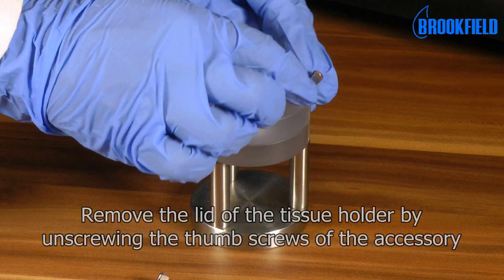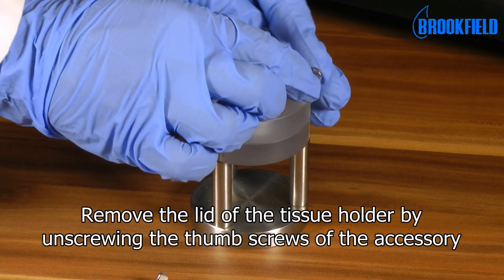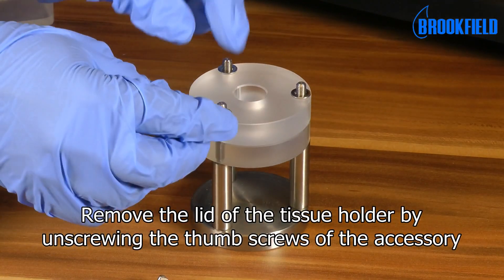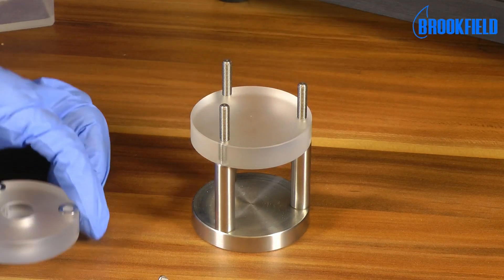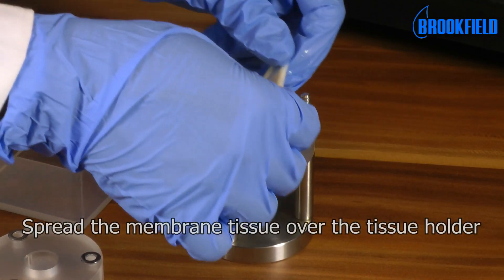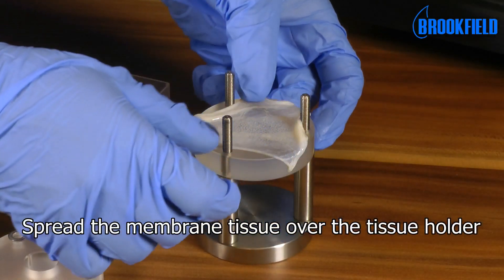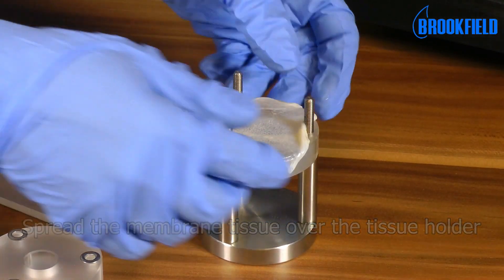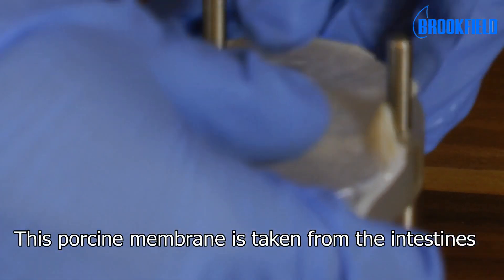Remove the lid of the tissue holder by unscrewing the thumb screws of the accessory. Spread the membrane tissue over the tissue holder. This porcine membrane is taken from the intestines.